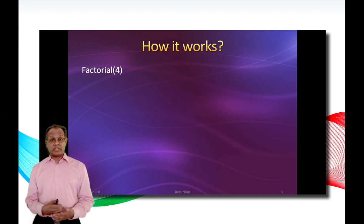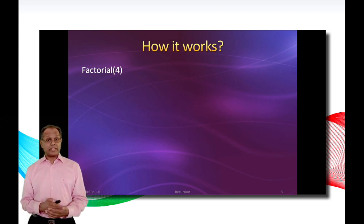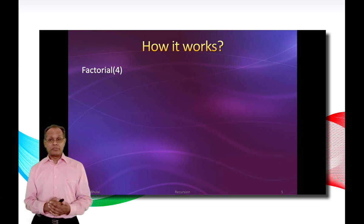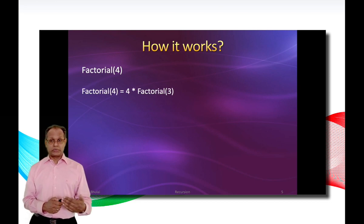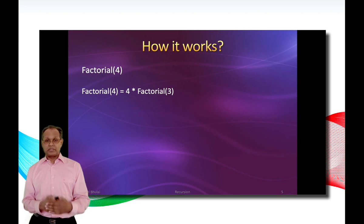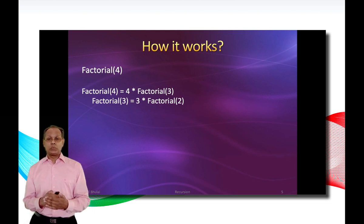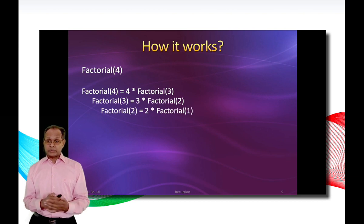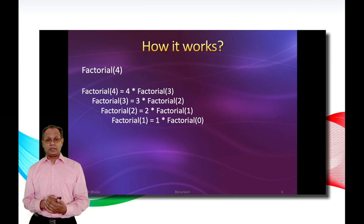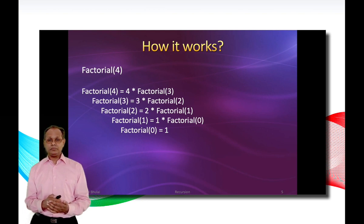Now let's see how recursion works in the factorial function. Let's calculate 4 factorial by the function we just created. According to the general rule, 4 factorial is equal to 4 times 3 factorial. That means we first have to calculate 3 factorial, which is 3 times 2 factorial. The result of 2 factorial is not known yet, so we need to calculate 2 factorial first, which is equal to 2 times 1 factorial. One factorial is also not known, so we need to calculate 1 factorial, which is 1 times 0 factorial.